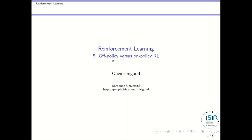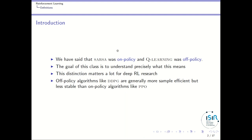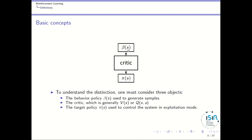Welcome to the fifth class about reinforcement learning, entitled off-policy versus on-policy reinforcement learning. We said in the previous class that SARSA was an on-policy algorithm and Q-learning was an off-policy algorithm. The goal of this class is to understand more precisely what this means. This distinction matters a lot for deep reinforcement learning research because off-policy algorithms like DDPG are generally more sample efficient but less stable than on-policy algorithms like PPO.